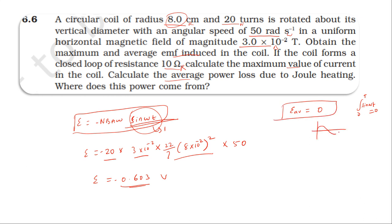For a sine curve over one loop, positive area and negative area are equal. So average EMF over one loop is 0.